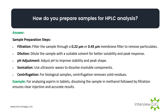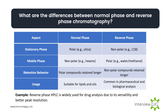How do you prepare samples for HPLC analysis? Sample preparation steps include: filtration — filter the sample through a 0.22 µm or 0.45 µm membrane filter to remove particulates; dilution — dilute in a suitable solvent for better solubility and peak response; pH adjustment — adjust pH to improve stability and peak shape; sonication — use ultrasonic waves to dissolve insoluble components; and centrifugation — for biological samples, centrifugation removes solid residues. Example: for analyzing aspirin in tablets, dissolving in methanol followed by filtration ensures clear injection and accurate results.